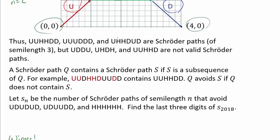Thus, UUHHDD, UUUDDD, and UHHDUD are Schröder paths of semi-length n. I highly encourage you to try to visualize these. For example, UHHDUD is UHHDUD. You can tell it's a Schröder path. It goes back down, and it never goes below the axis.